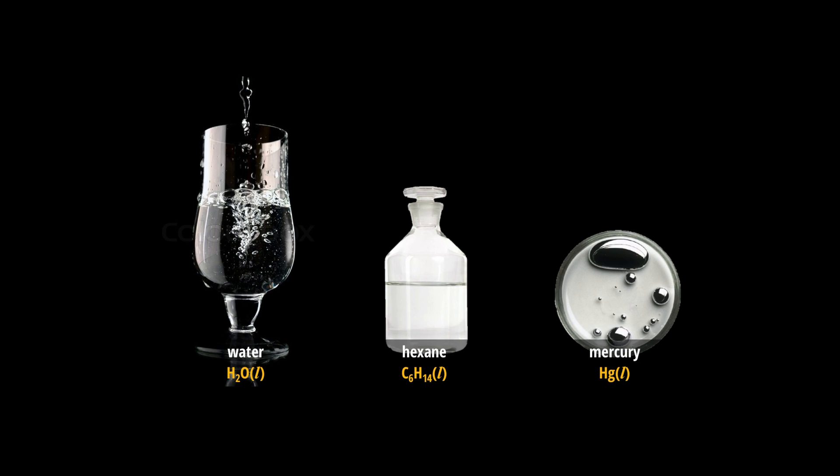Here are some examples of different liquids. Water and hexane are examples of compounds in the liquid state, and mercury is an example of an element in the liquid state.